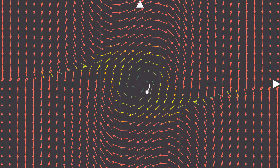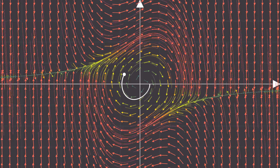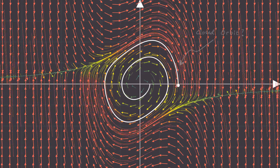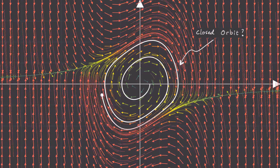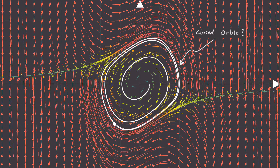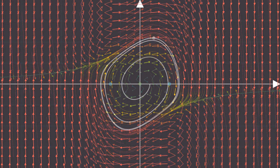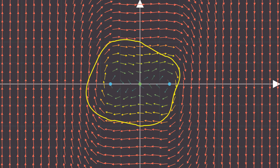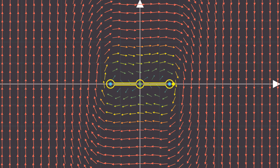One of the questions we were left with was: what is the significance of a closed orbit like this one, and how can we predict and understand it? In this first video of this series, we're going to begin to answer this question by looking at something called index theory. So let's get started.